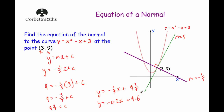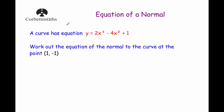Let's have a look at another example. So we've got a curve with equation y equals 2x cubed subtract 4x squared plus 1, and we've been asked to work out the equation of the normal to that curve at the point (1, -1). So we're going to differentiate it first of all — we're going to find dy/dx.